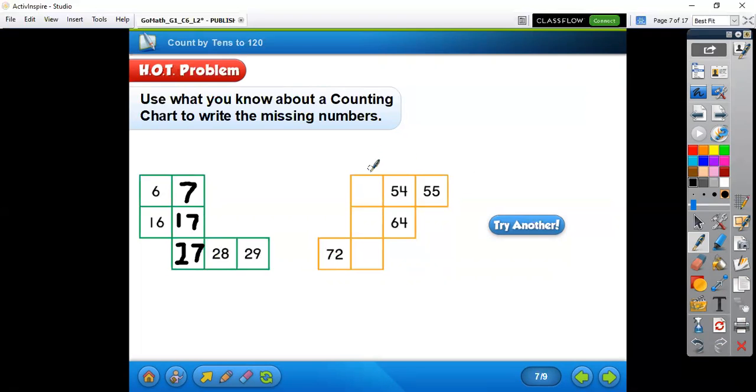So what comes before 54? Nice, 53. So we'd write 53. And 10 more than 53 would be 63. And then 10 more from there would be 73, because the tens place goes up and the ones stay the same. Nice job.